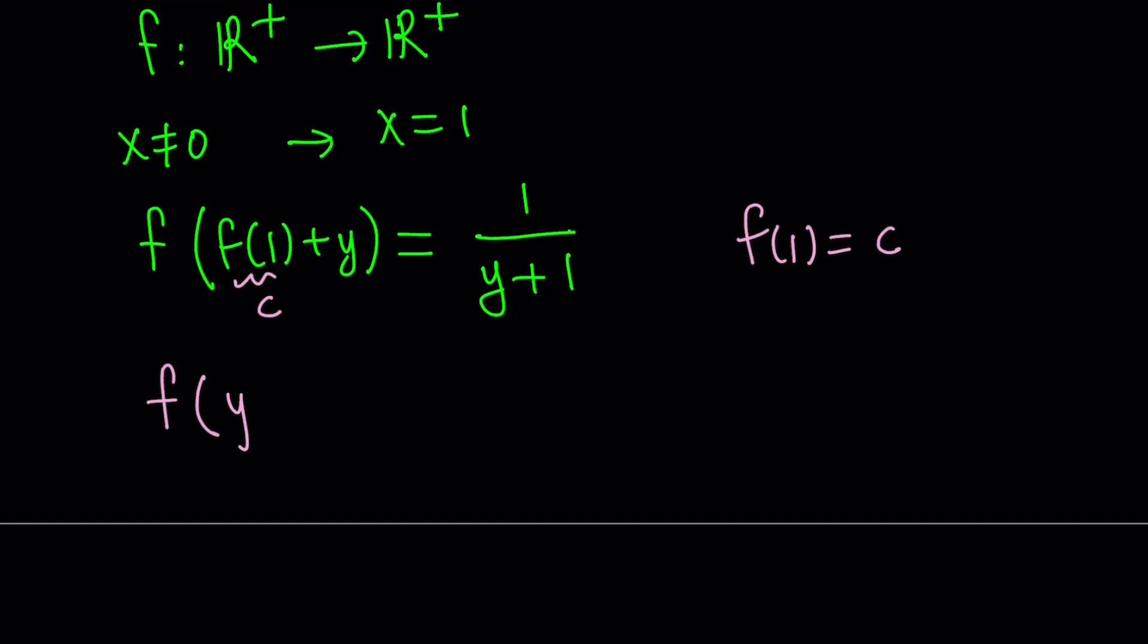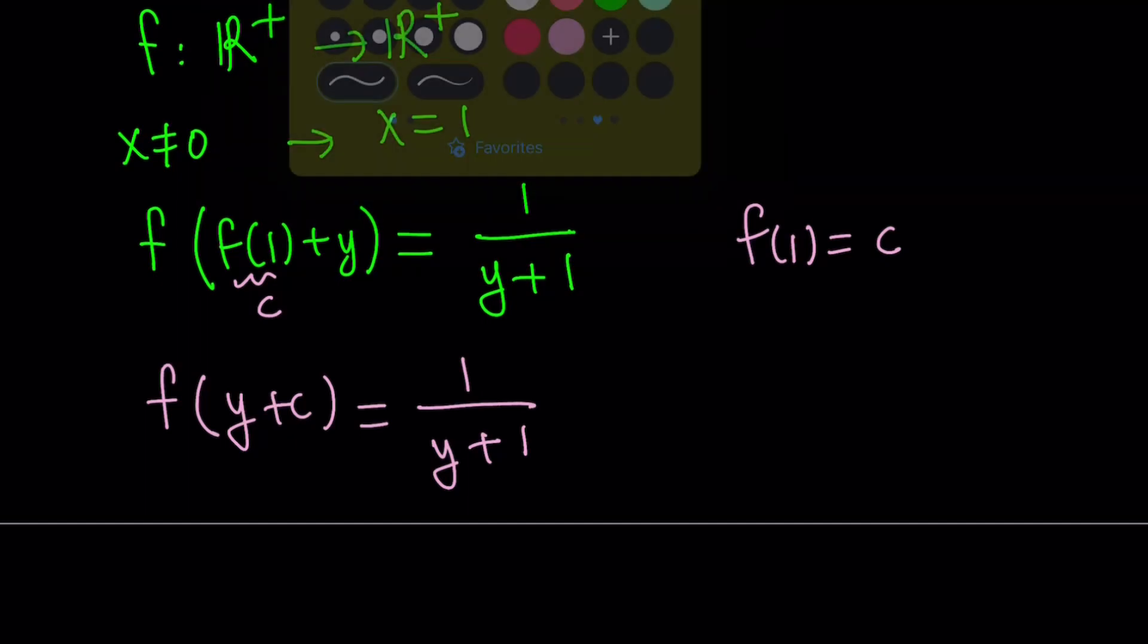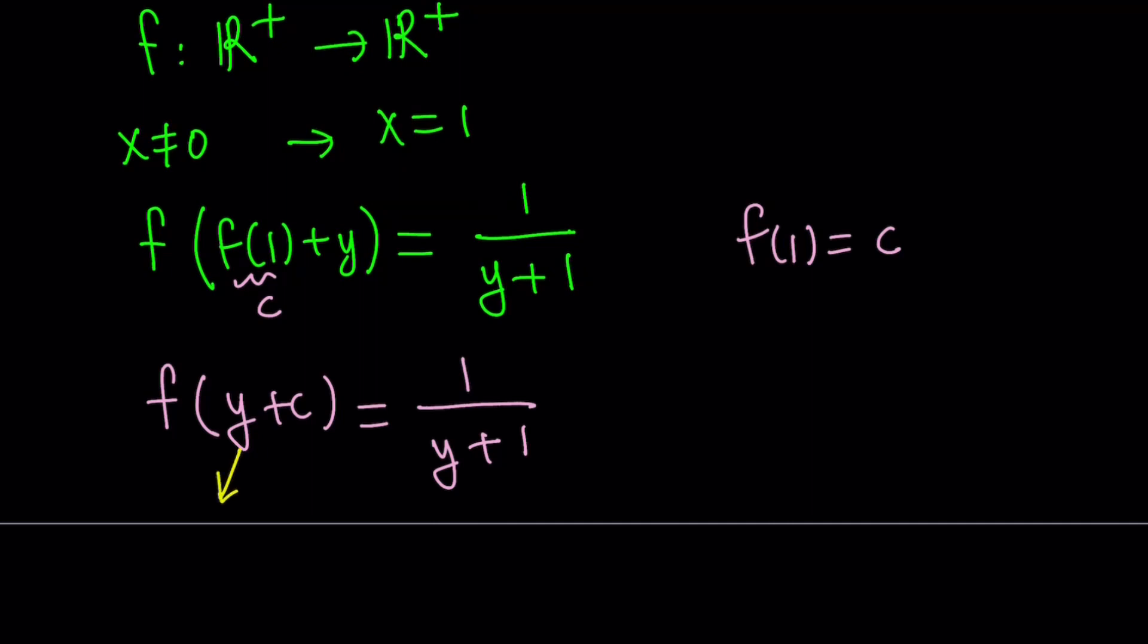f of y plus c equals 1 over y plus 1. This is nice because we didn't get something for f of y, but we're almost there. So the next thing we can do is replace y with something. And in this case, since we have y plus c, it makes sense if you replace y with y minus c. Because y minus c plus c equals y, right? C cancels out.